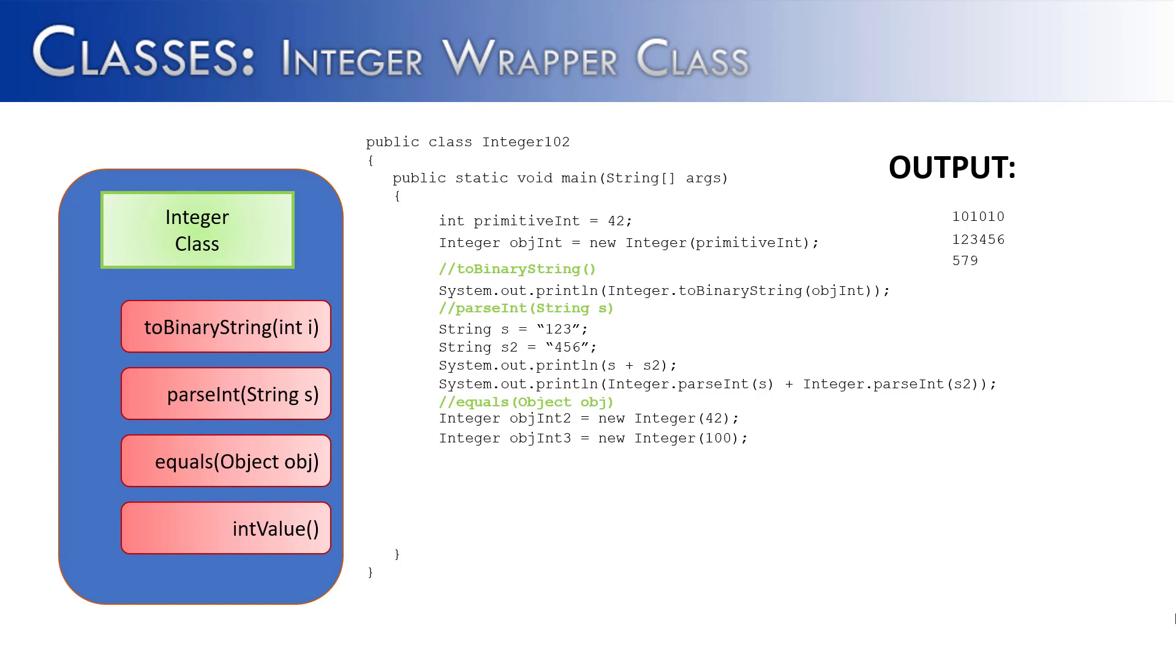The equals method of the integer class is a fairly simple method which is going to allow us to say, hey, is one integer object equal to another integer object by comparing the values? First, I compare the original object, which has 42 in it, and object2, which also has 42 in it. It is going to output true, because 42 is equivalent to 42. Next, I'm going to compare two different integer objects. One contains 42, the other contains 100, and the result is predictable: false. Equals is a Boolean return method, and we can see the true and false results of how the equals method works with the integer class.